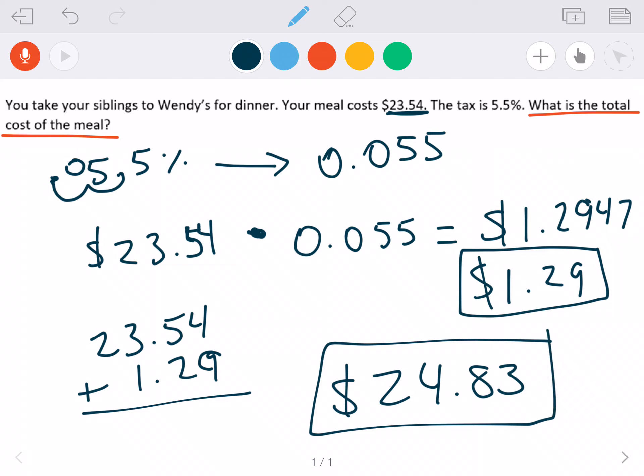So again, any problem that has to do with tax, tip, or discount, the first step is to change that percent to a decimal. Second step is always going to be multiplying it by the price of the good or whatever it is in the problem. And then the last step is if it's a tax or a tip, that makes it more expensive, so that's why we added. If it was a discount, then we would subtract from our original price.